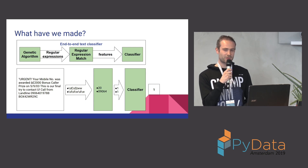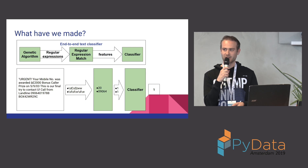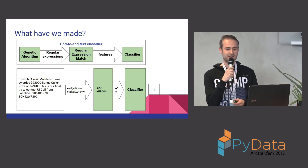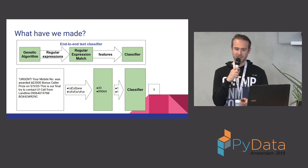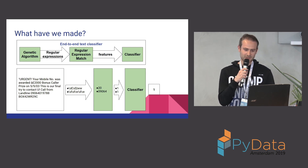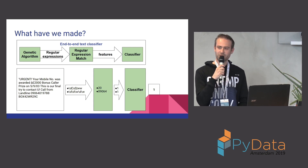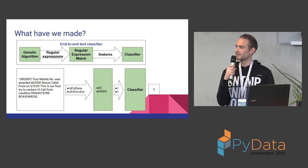To transform the matches into features, we simply say: did you find a match or not? If you did, you get a one. If you didn't, you get a zero. So here we have a binary feature vector of two, which we feed to a classifier, which will then give us a prediction — which is in this case one.